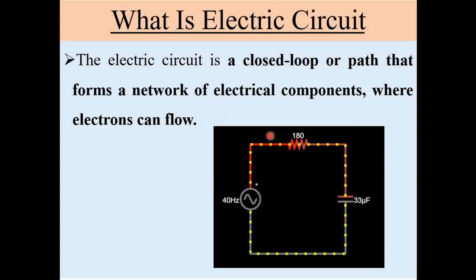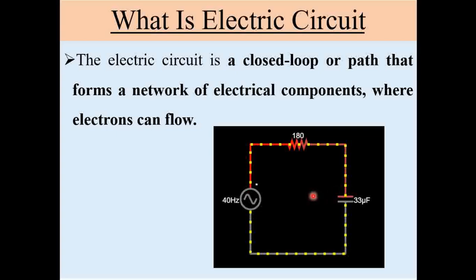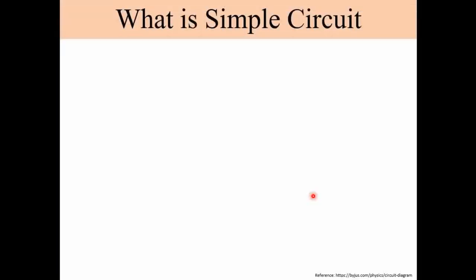It is a complete circuit or closed loop. You can observe here: this is the power source with a positive terminal and a negative terminal. The positive terminal is connected to a resistance, the resistance is connected to a capacitor, and the capacitor is connected to the negative terminal of the power source — forming a complete closed loop. The resistance and capacitor are considered as loads connected to the circuit.